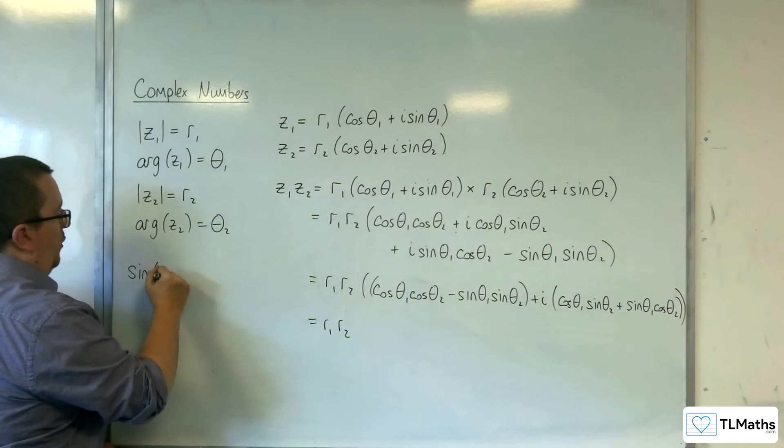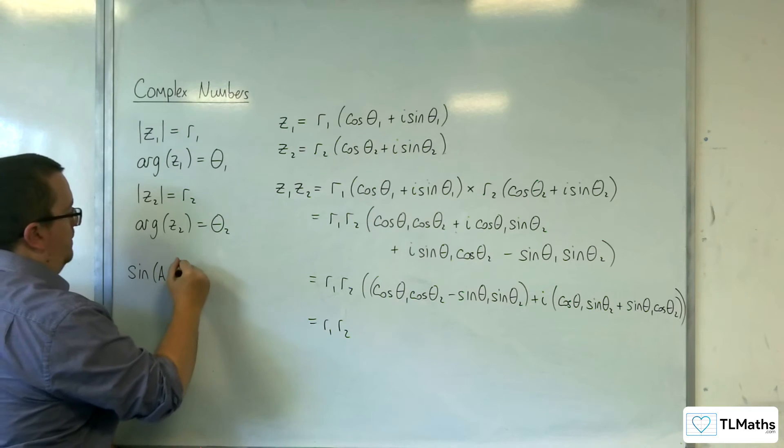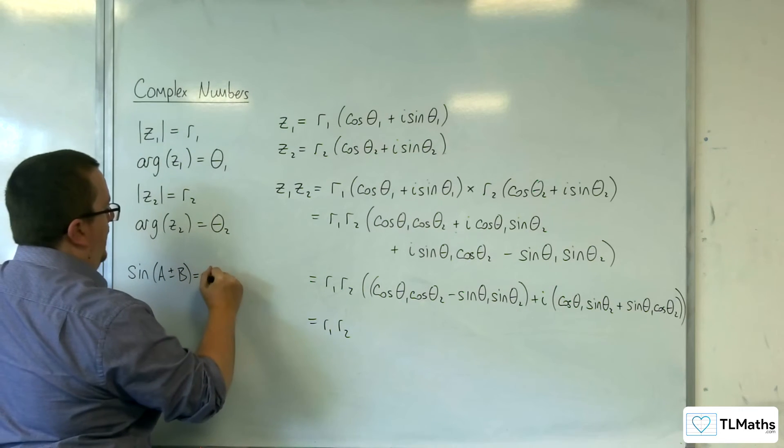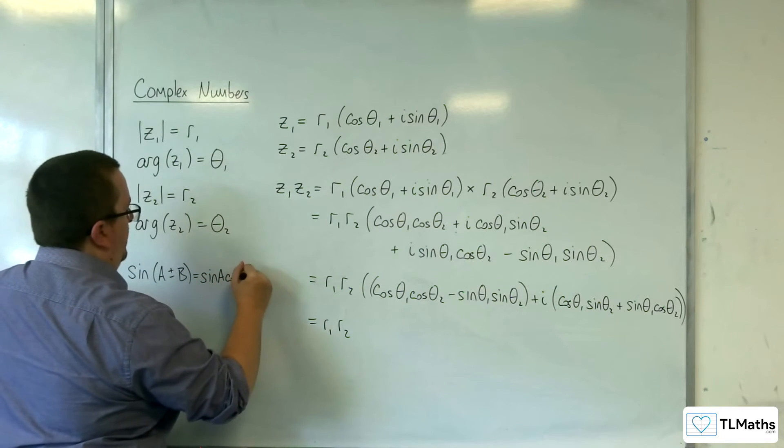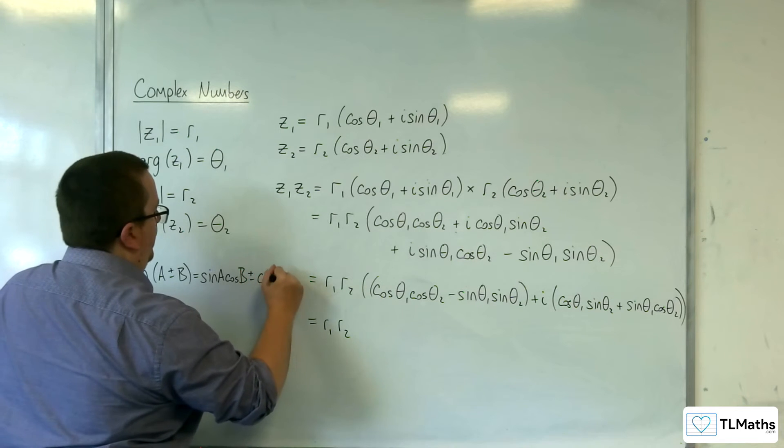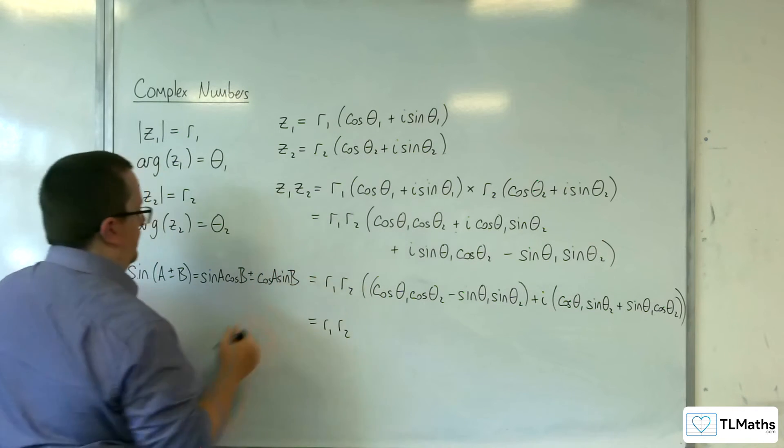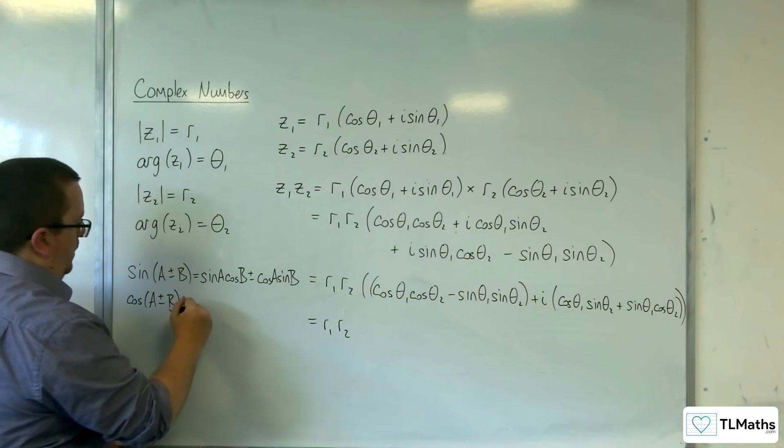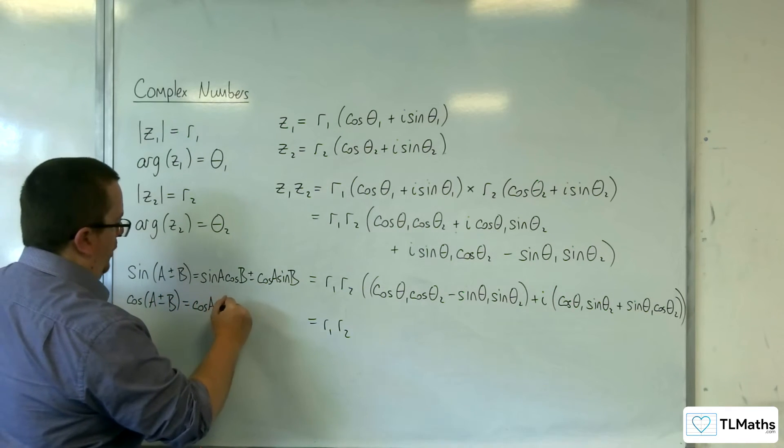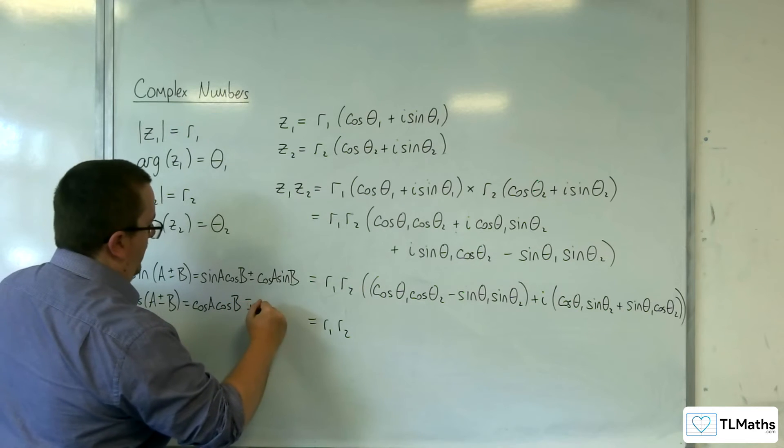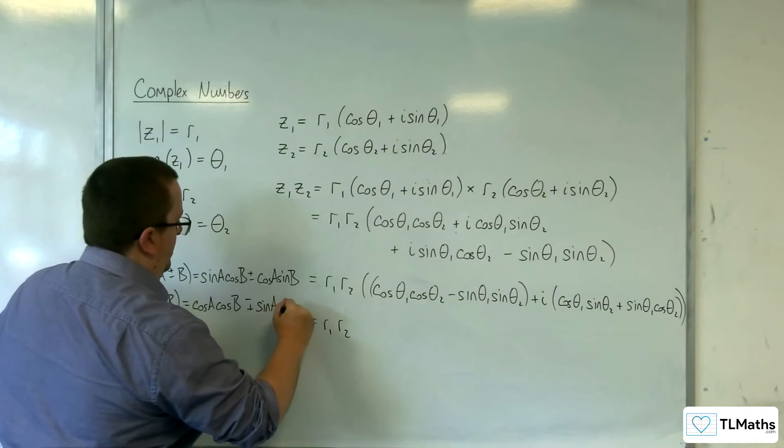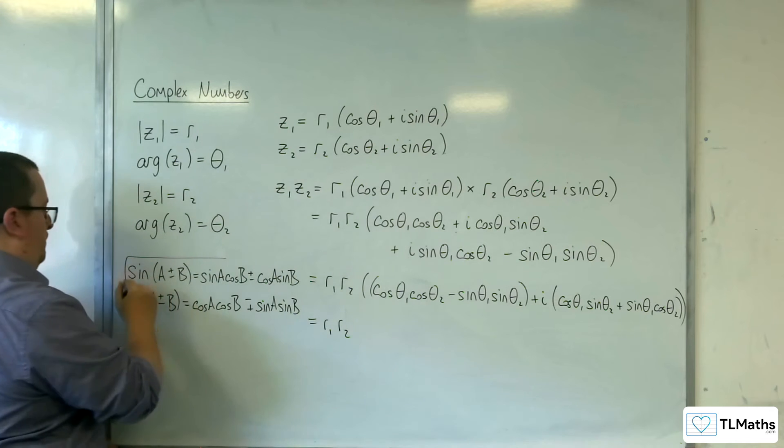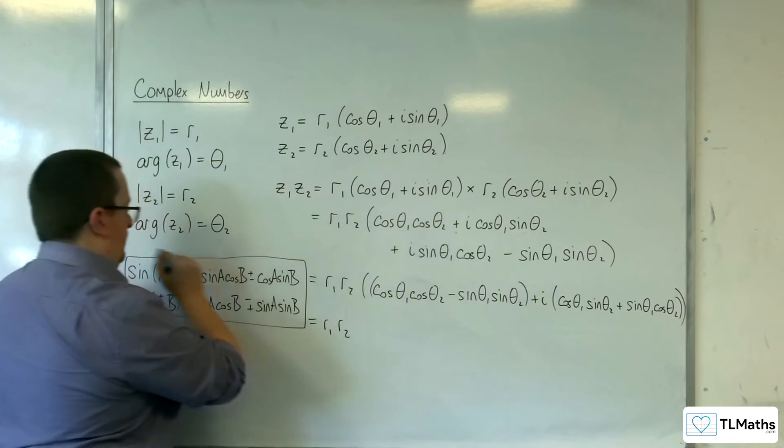So sine of A plus or minus B is equal to sine A cosine B plus or minus cosine A sine B, and cosine of A plus or minus B is cosine A cosine B minus or plus sine A sine B.